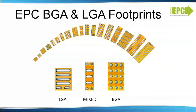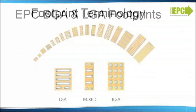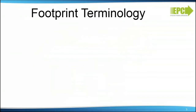EPC parts are wafer level chip scale packages. The footprints are LGA on the left, BGA on the right, or a mixture of the two in the center. All footprints are designed using metric units of one micrometer. Footprint terminology is very important because EPC footprints are different from your typical footprint designs.